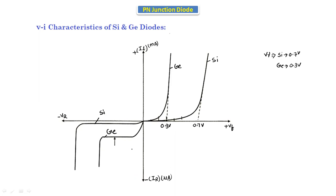In an exam, you will be asked to draw the VI characteristics for both silicon and germanium in the same graph. For silicon, the cut-in voltage is 0.7 V so it starts conducting from 0.7 V. For germanium, it starts conducting from 0.3 V. The reverse bias characteristics are also drawn for both silicon and germanium on the same graph.